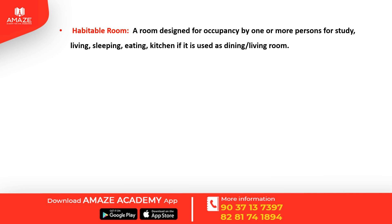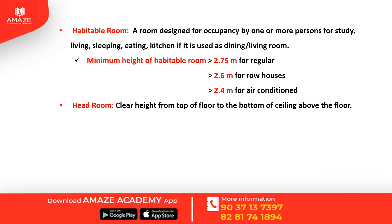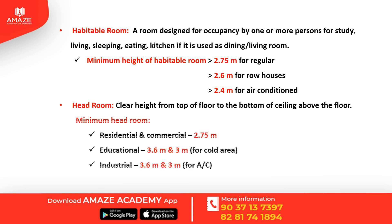Habitable rooms include the study room, living room, bedroom, and dining room. The minimum height of a habitable room should be greater than 2.75 meters for regular rooms, greater than 2.6 meters for row houses, and greater than 2.4 meters for air-conditioned rooms. Headroom is the clear height from the top of the floor to the bottom of the ceiling above. Minimum headroom is 2.75 meters for residential and commercial buildings.